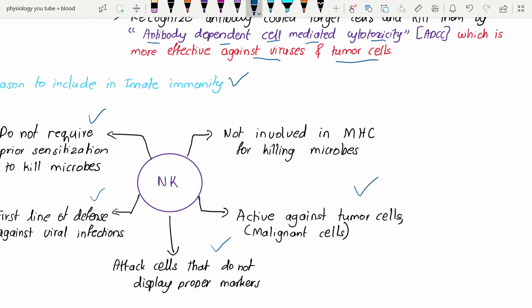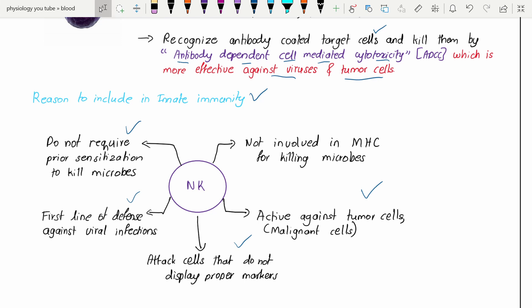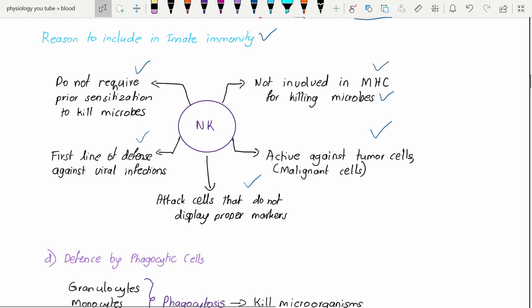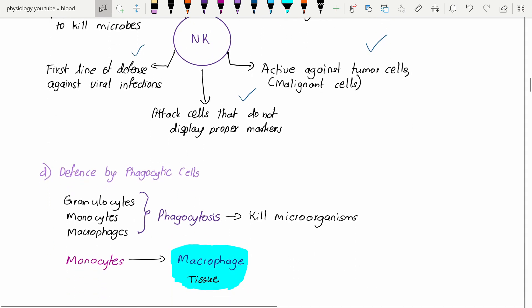These natural killer cells are active against tumor cells, mainly malignant cells, and these do not involve the major histocompatibility complex for killing microbes. MHC is the major histocompatibility complex - we are going to study that in antigen presentation and cell-mediated and humoral immunity.